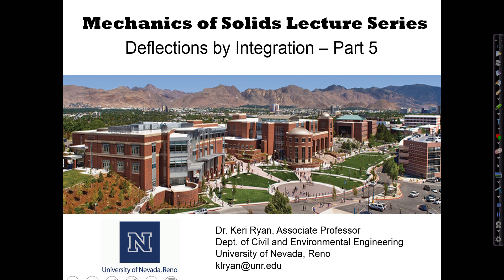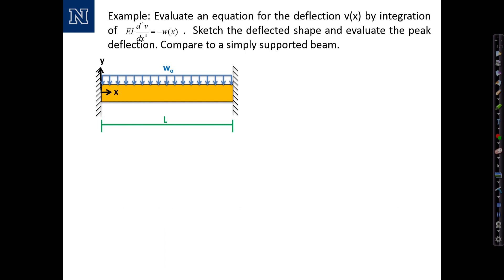Welcome back to the Mechanics of Solids Lecture Series. In this series of videos, we're evaluating beam deflections by integration of the beam differential equation. In this next example, we'll apply the fourth-order beam differential equation. The example is a fixed-fixed beam with a uniform load. I really like this example to illustrate the utility of the fourth-order equation — this is a second-order indeterminate system that we don't know how to analyze with any of the methods we've learned so far in this class.